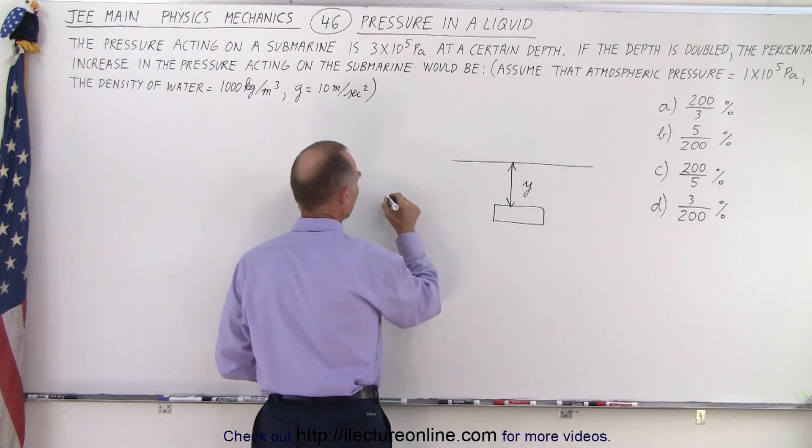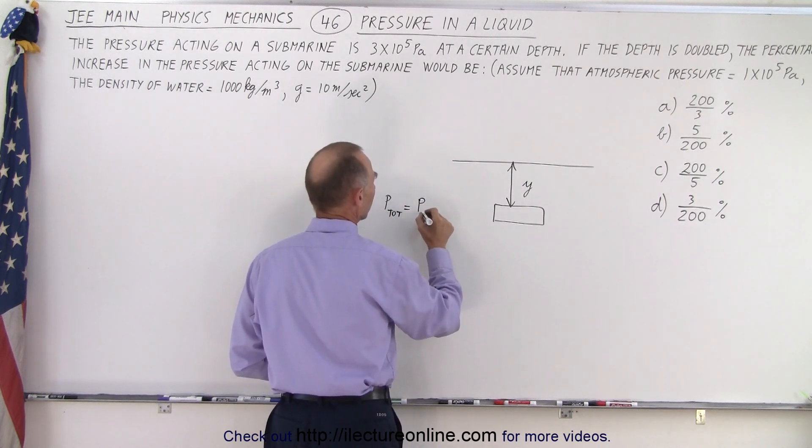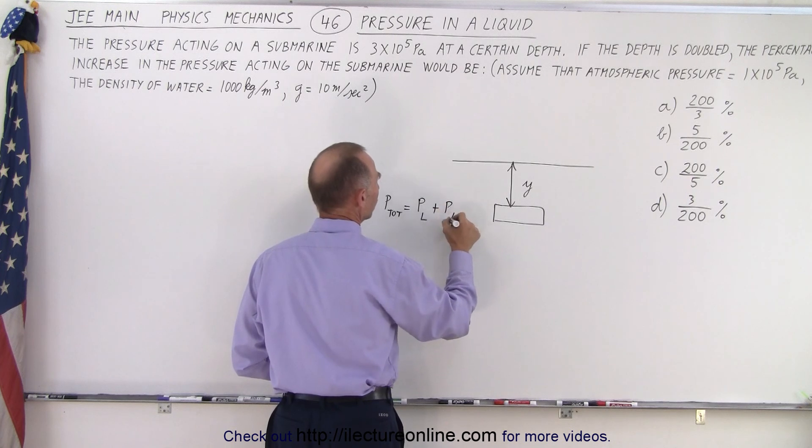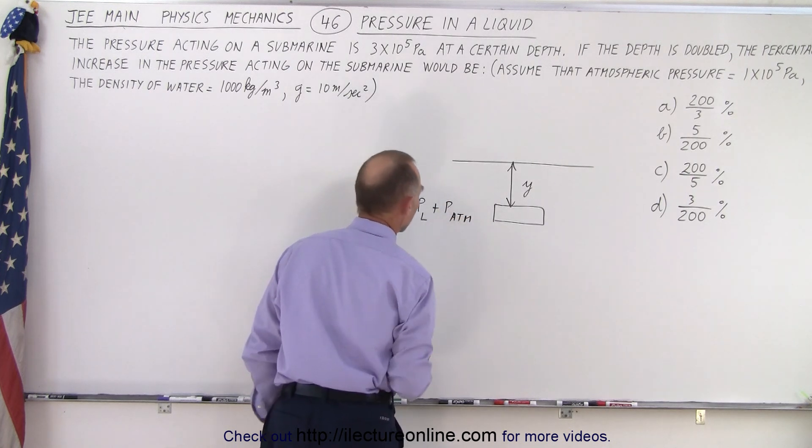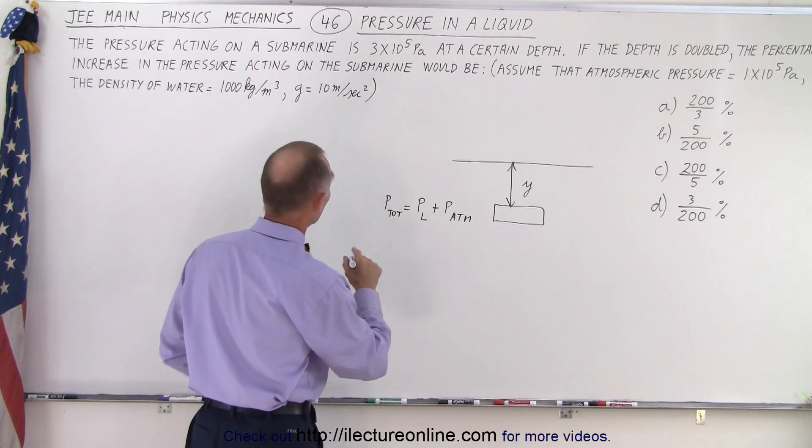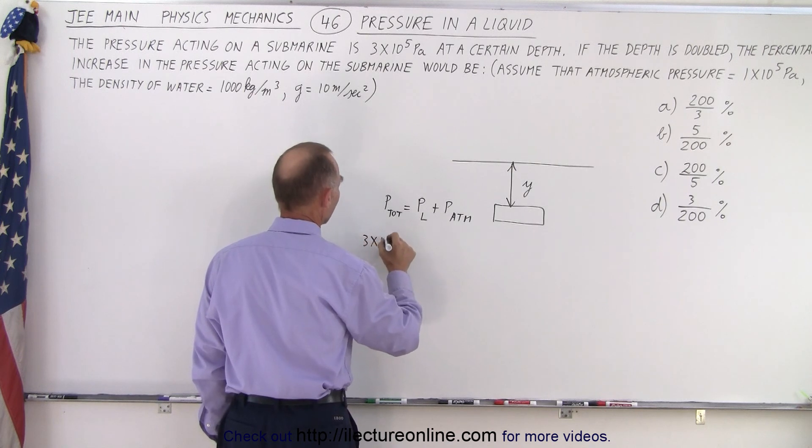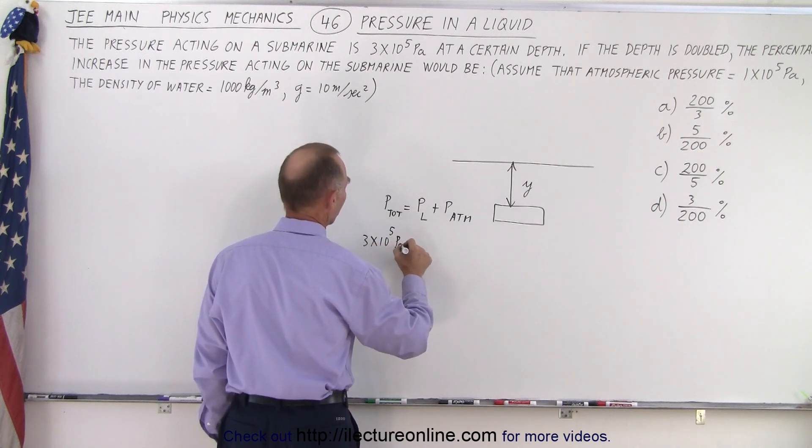The pressure total that the submarine experiences is pressure due to the liquid plus the pressure due to the atmosphere. In this case, the total pressure is 3 times 10 to the fifth pascals, which is equal to the pressure due to being inside the liquid, plus the atmospheric pressure which is 1 times 10 to the fifth pascals.